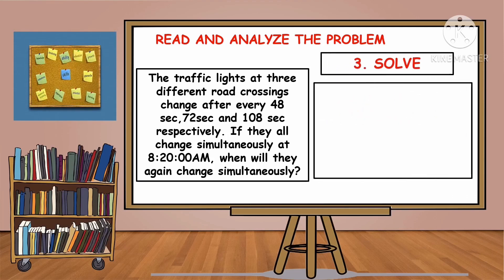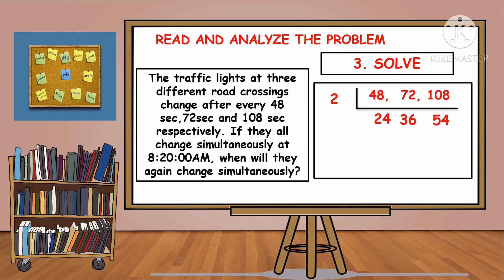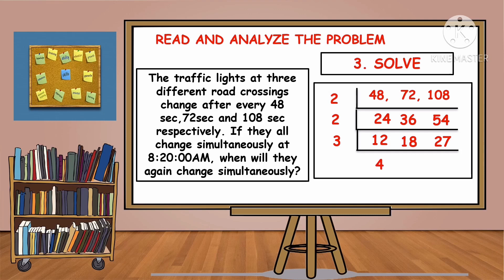Let us solve the problem using continuous division. Write first the given numbers: 48, 72, and 108. Then draw an inverted division. Think of a number that we can divide into 48, 72, and 108. Since they are all even numbers, we can divide them by 2. 48 divided by 2 is 24, 72 divided by 2 is 36, and 108 divided by 2 is 54. They are even numbers again, since they end in 4 and 6, so divide by 2 again. 24 divided by 2 is 12, 36 divided by 2 is 18, and 54 divided by 2 is 27. Now think of a number that can divide 12, 18, and 27 — they are all multiples of 3, so divide them by 3. 12 divided by 3 is 4, 18 divided by 3 is 6, and 27 divided by 3 is 9.